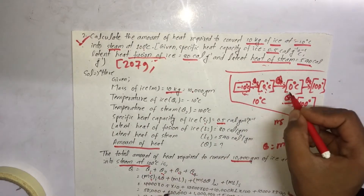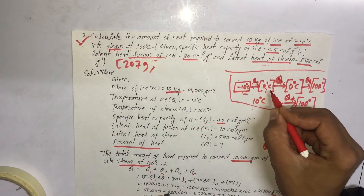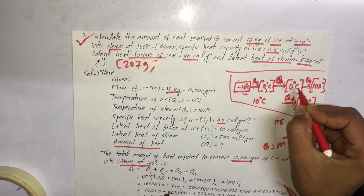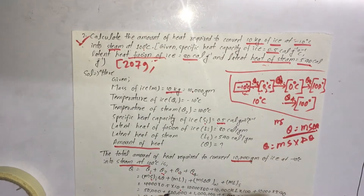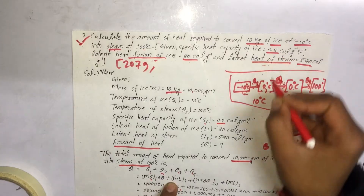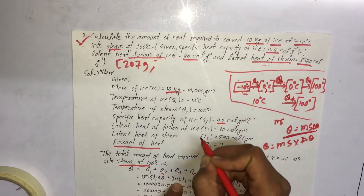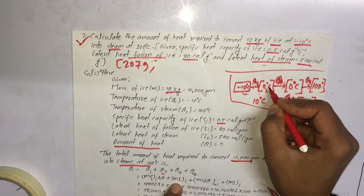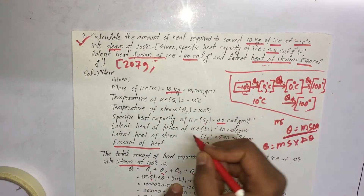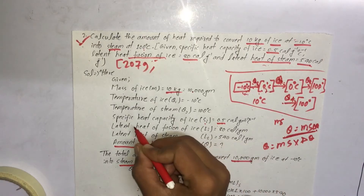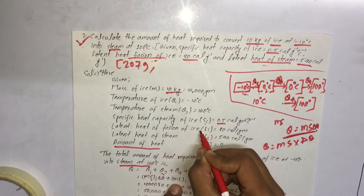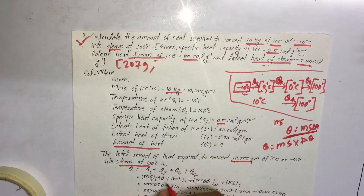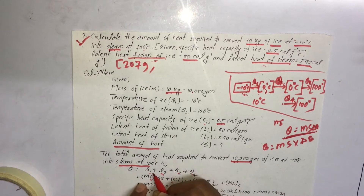For Q2, at zero degrees Celsius, ice converts to water. The formula is mass into latent heat of fusion of ice. The latent heat of fusion of ice is 80 calories per gram. So Q2 equals mass into 80 calories per gram.